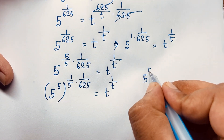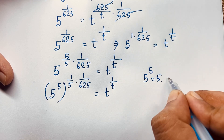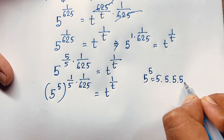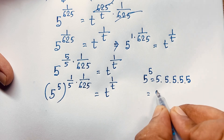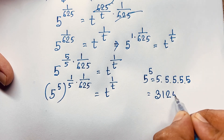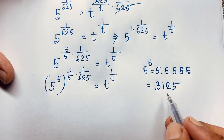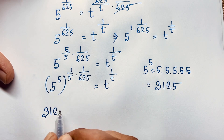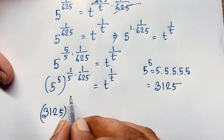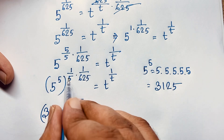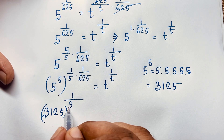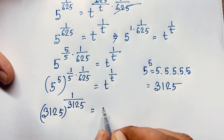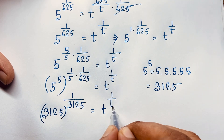5 to the power 5 is 5 times 5 times 5 times 5 times 5, which equals 3125. So we have 3125 to the power 1 over 3125 is equal to t to the power 1 over t.